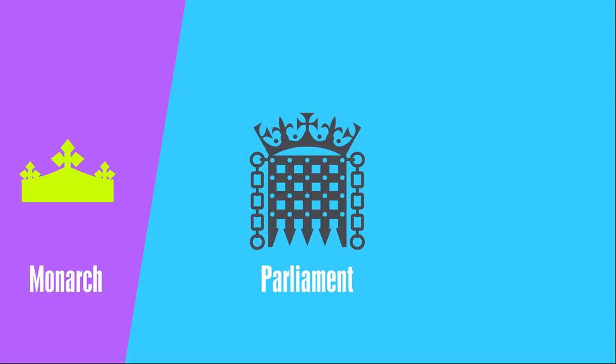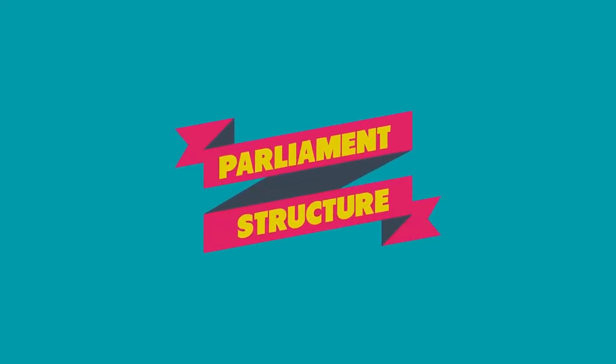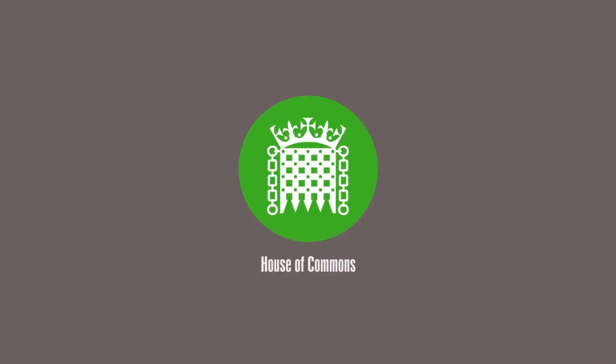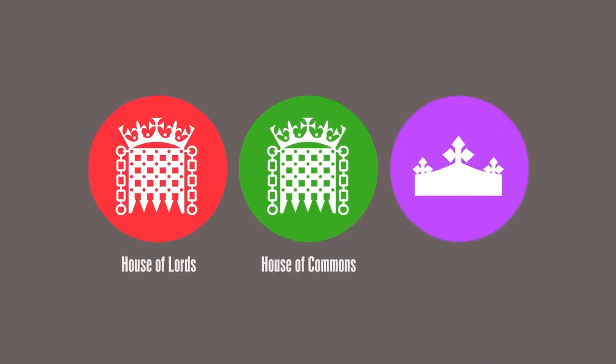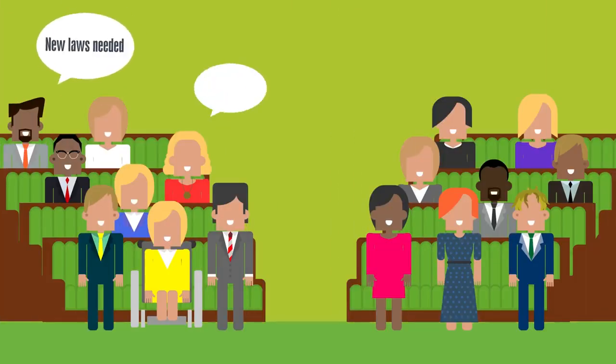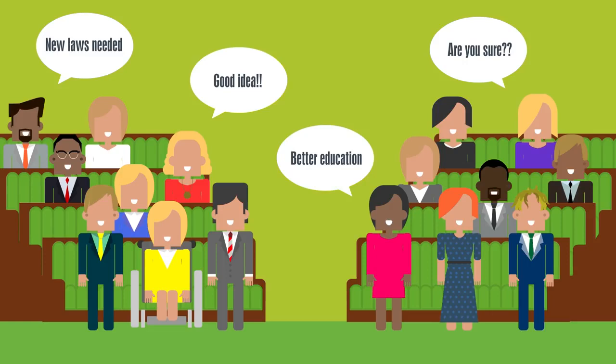Let's take a closer look at the UK Parliament today. Parliament is made up of three parts: the House of Commons, the House of Lords, and the Monarch. The House of Commons is the elected Chamber of Parliament. It debates big issues, proposes laws, amends existing ones, and challenges the government's work. There are 650 members of Parliament, or MPs, who each represent a constituency in the UK.